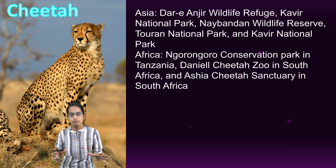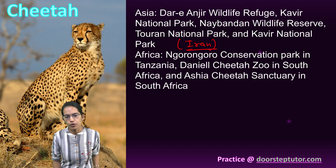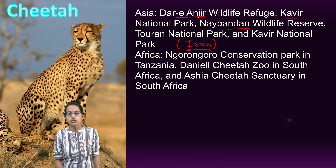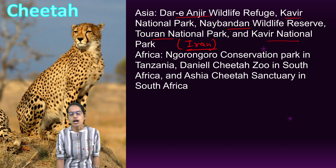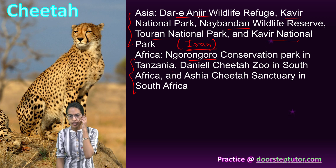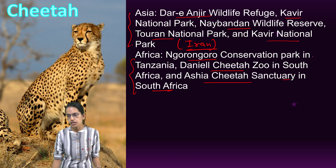In Asia, in Iran, there are five important conservation sites: Dare Anjir Wildlife Refuge, Kavir National Park, Naibandan Wildlife Sanctuary, and Toran National Park. In Africa, conservation sites include the Ngorongoro Conservation Park in Tanzania, the Daniel Cheetah Zoo in South Africa, and the Ashia Cheetah Centre in South Africa. These are the major national parks and regions where cheetah are preserved.